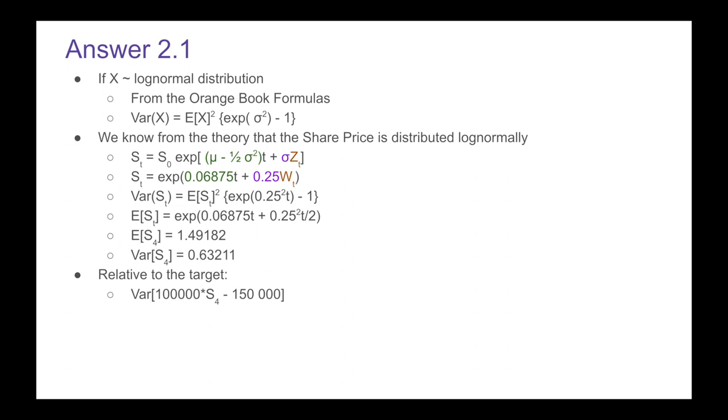We have the variance of 100,000 times the share price in four years time minus 150, that's the goal amount. Because it's the variance and we're dealing with a constant, if it's constant on its own it falls away. If it's a constant attached to a random variable it's going to get squared.